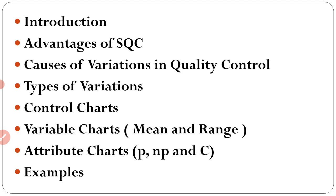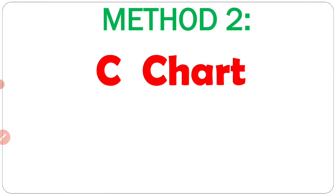In this chapter we are covering these points: Introduction, Advantages of SQC, Causes of Variations in Quality Control, Types of Variations, and Control Charts. There are 5 different charts: Mean and Range Chart (X-bar and R Chart) and Attribute Charts — P, NP, and C Chart. In the previous two lectures we discussed the X-bar and R Chart. In this lecture we will discuss the C Chart, and in the next lecture we will discuss P and NP charts respectively.